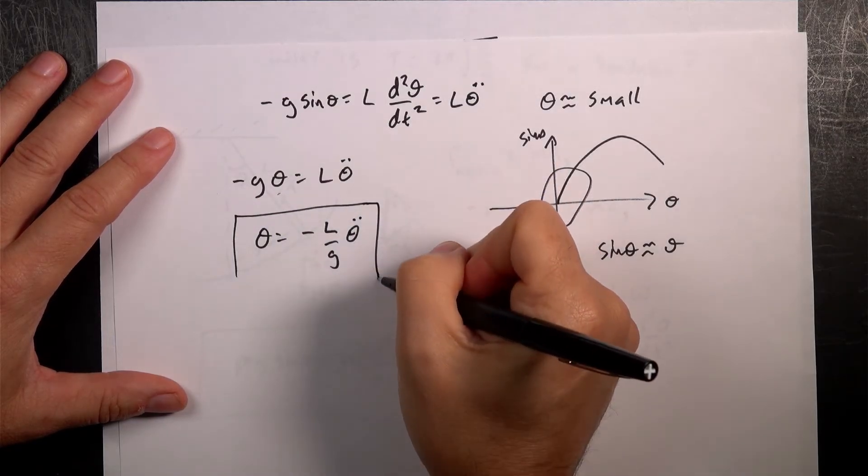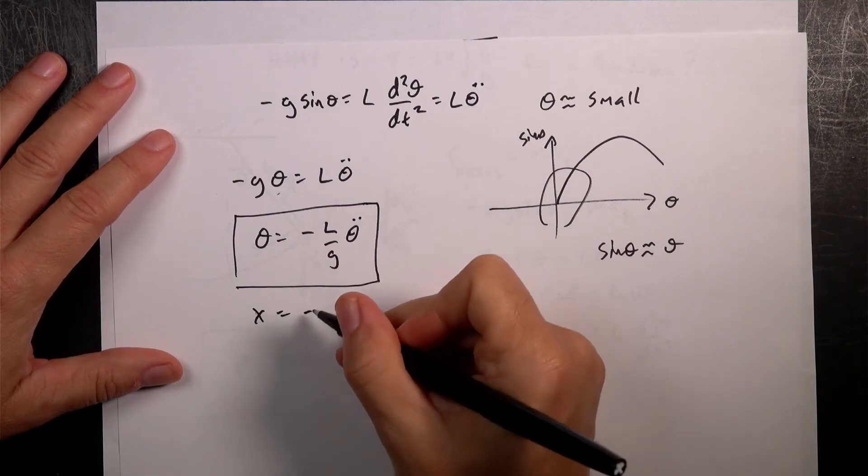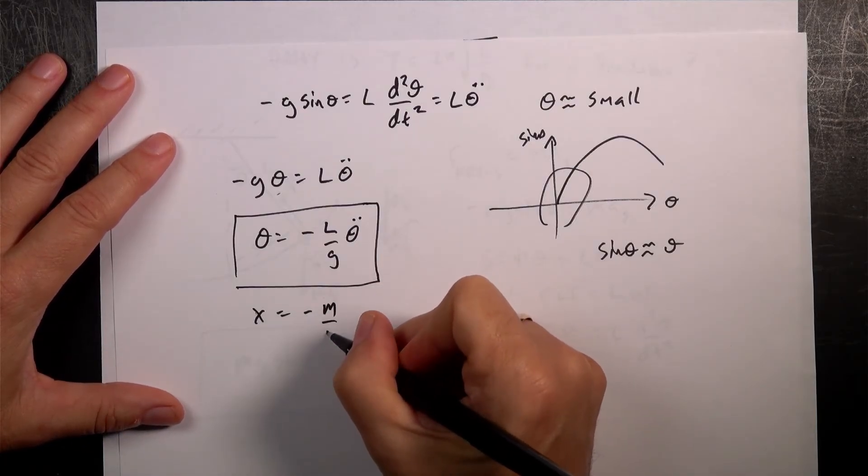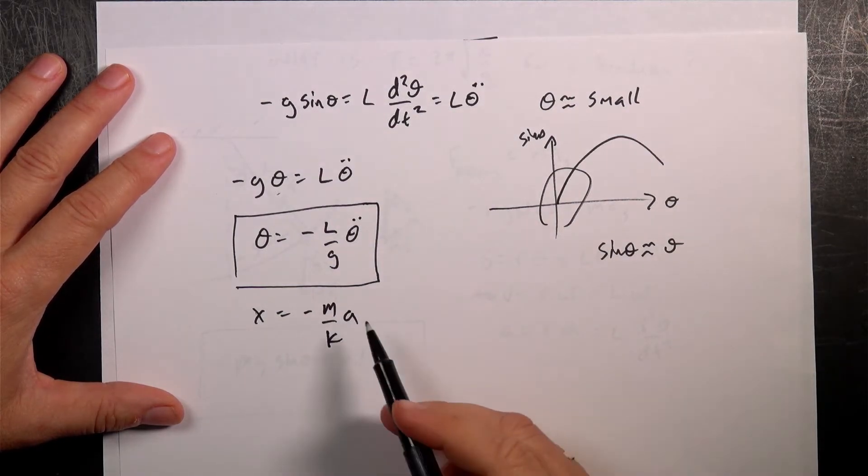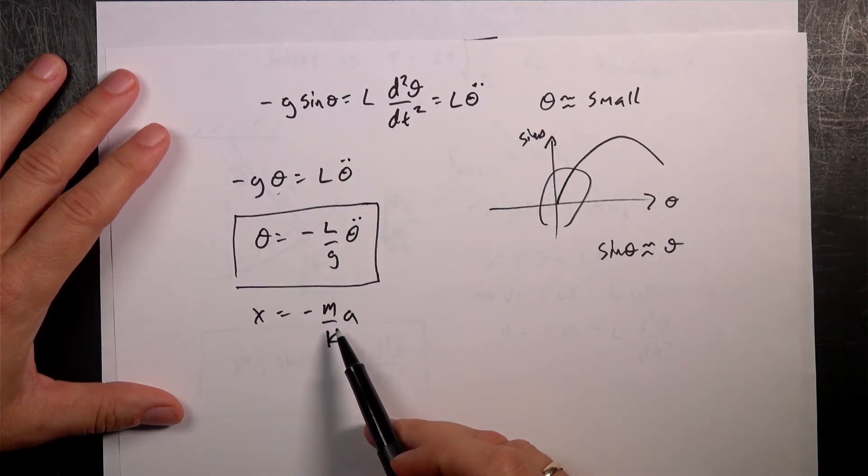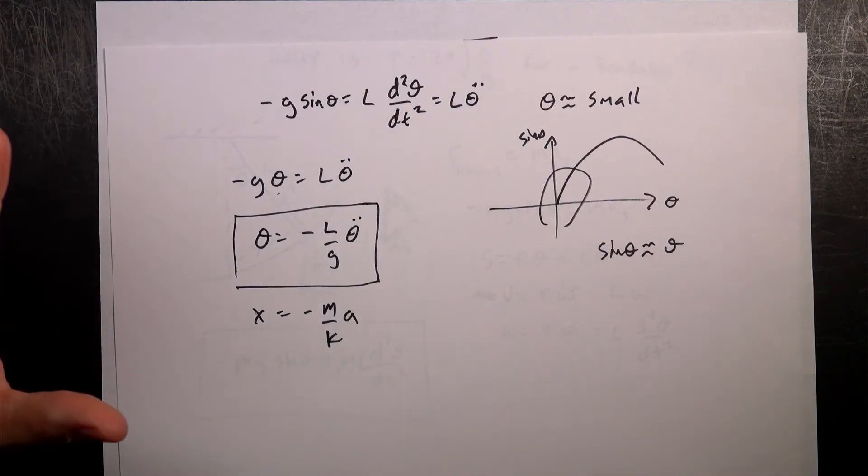Now, if you wanted to stop, you could. You could stop and say, oh, that looks like x equals negative m over k times a. Right? That's for a spring. And then you could say, well, I know the period of oscillation for a spring is square root of m over k. And so, that does it. And that is the same form. But we're not going to do that.